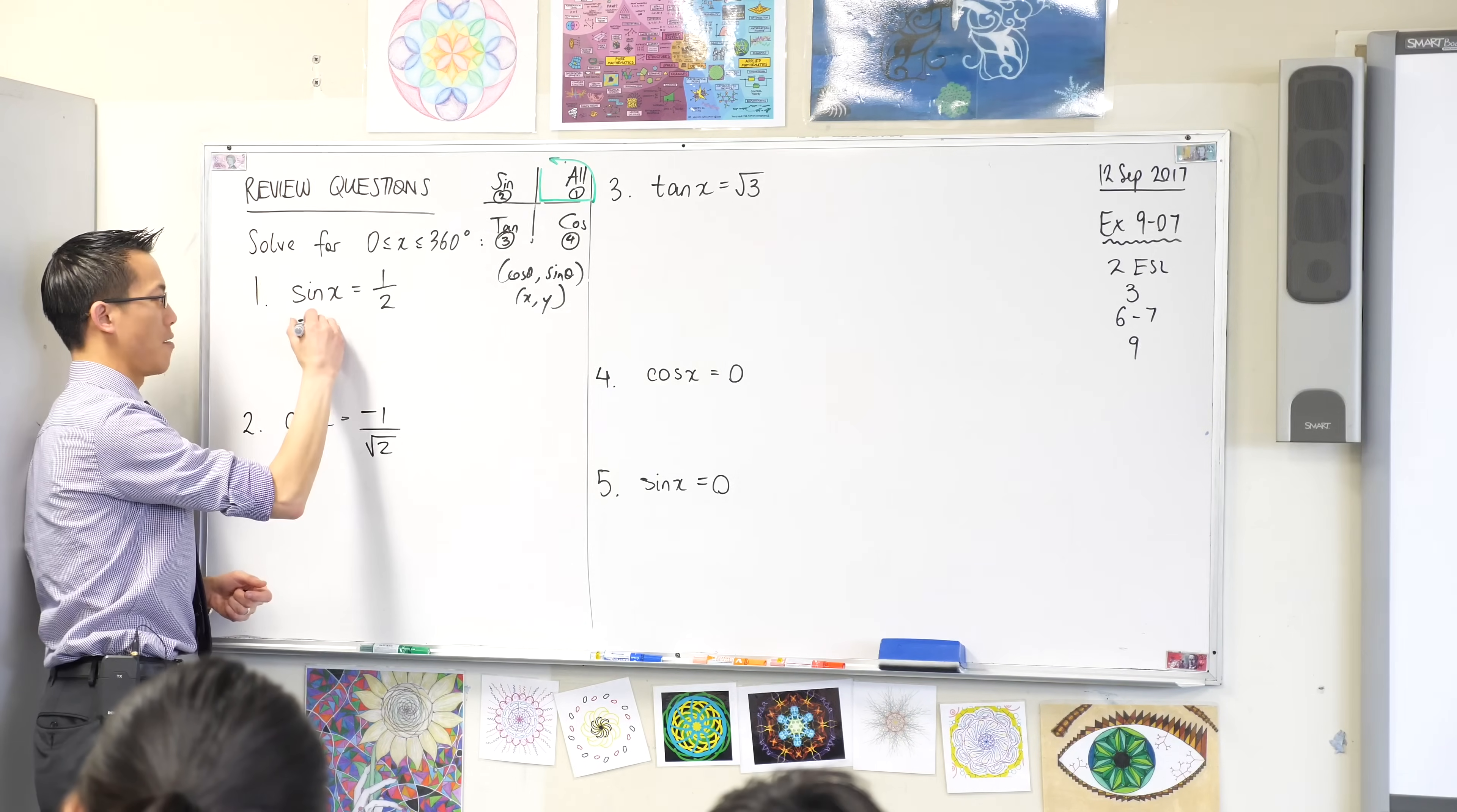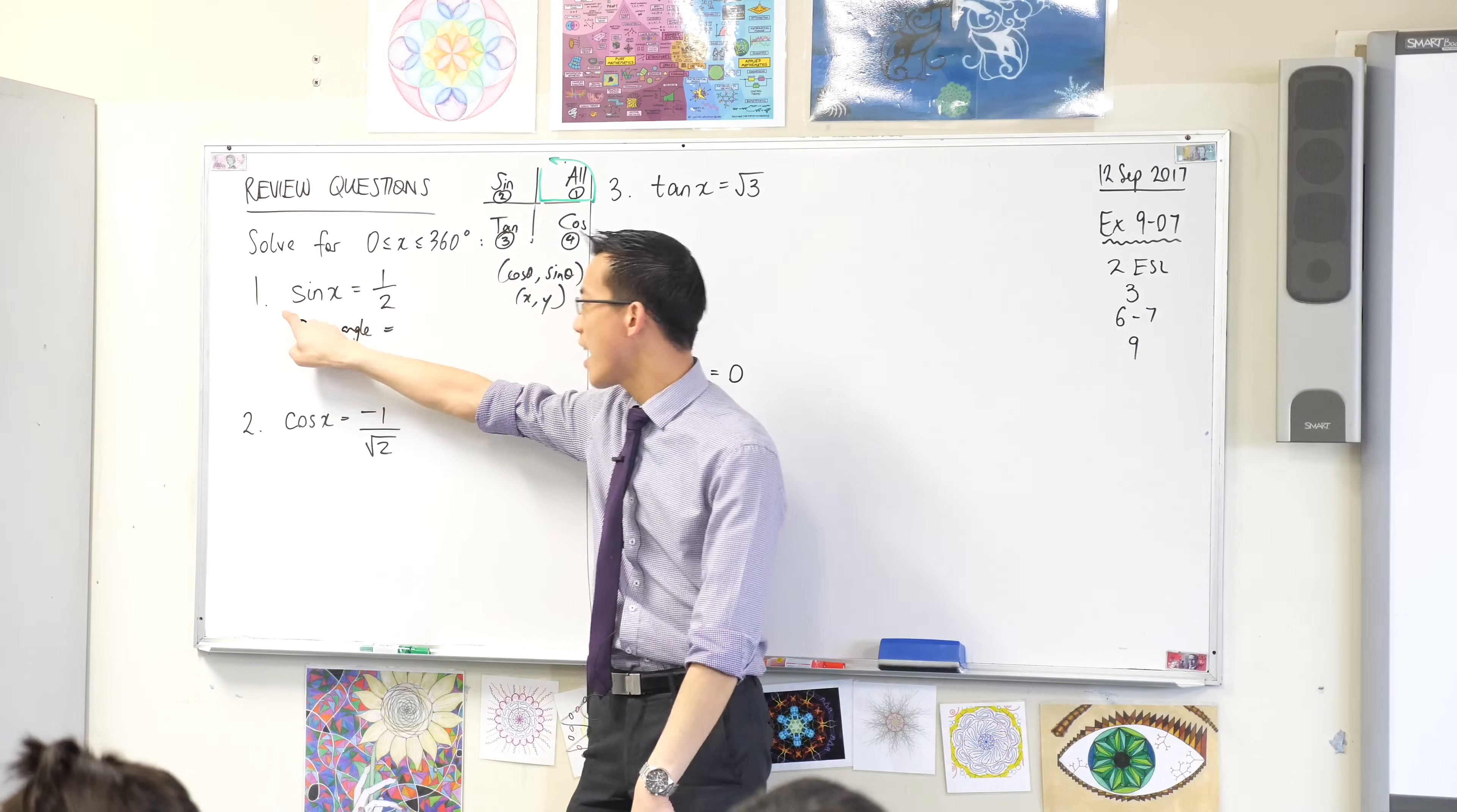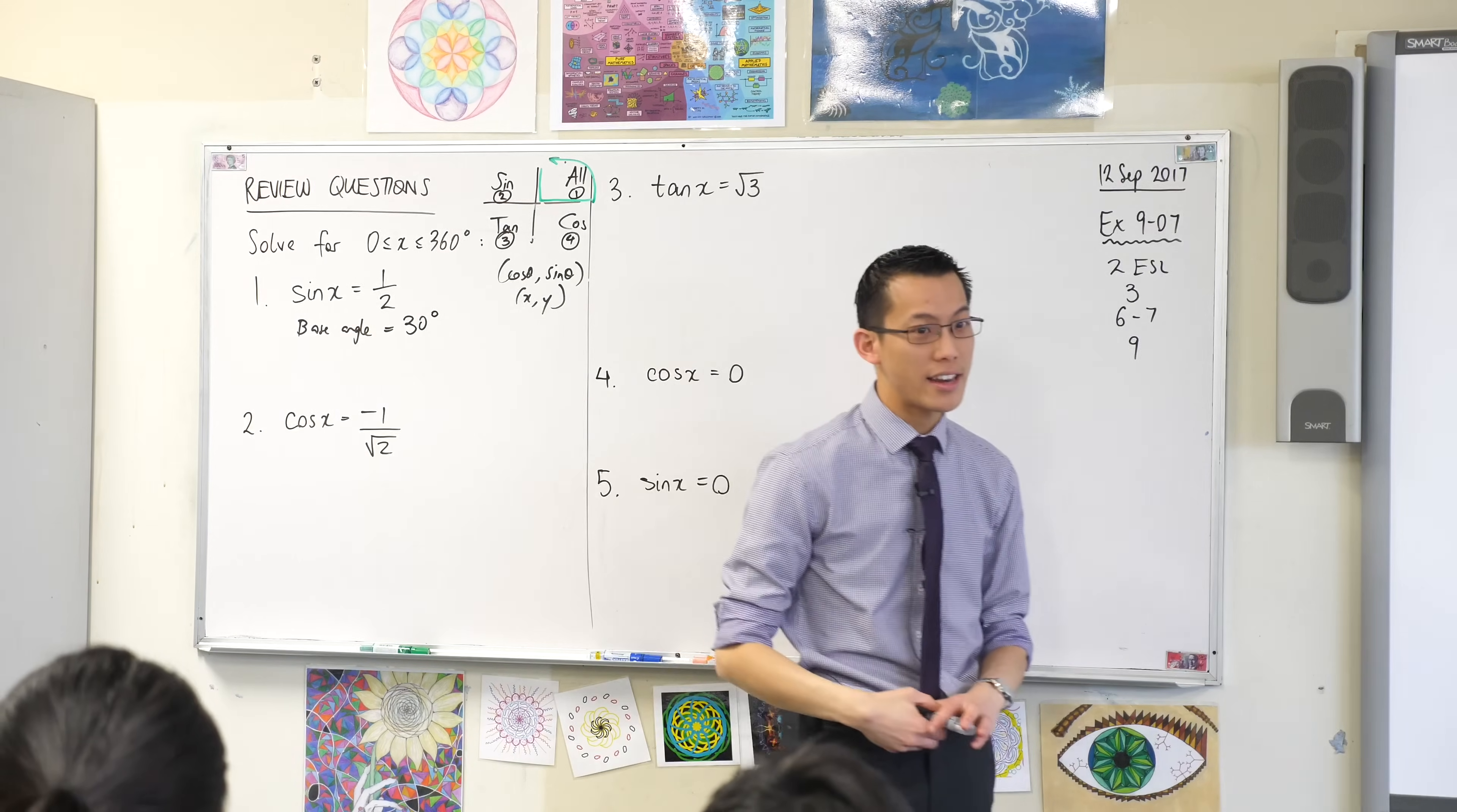Underneath this I want you to write down base angle. I'll explain what that means in a second, okay? Now, sine x equals a half. There's some angle x such that when you go sine of that angle you get a half. Now this is, I picked these numbers because they're the nice convenient ones. Does anyone remember what it is? It's actually 30 degrees. Now if you can't remember, that's no problem.